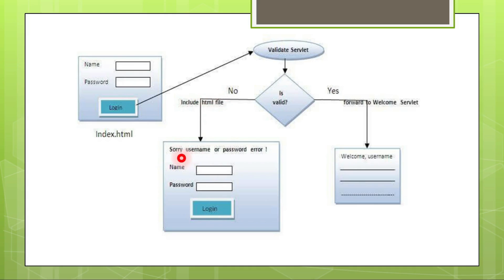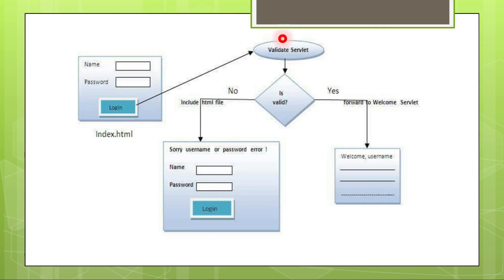If you want to show a message at the top, you can do that using PrintWriter. Before including the HTML page content, you write a line like 'sorry, username or password error' and then include the HTML file so the same login page appears again where the user needs to re-enter the password. When the user submits again, the request goes to the validate servlet again and checks the password. If correct, the user proceeds; otherwise the same page loads again. In reality, you can allow only three attempts before killing the session or deactivating the account for 24 hours.